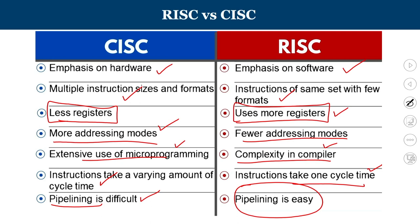We will learn about the pipelining concept of the architecture a little later in this course. So now we had a quick summary of RISC and CISC architecture — the broader comparisons in terms of addressing modes, instruction length, code size generated, and execution time.